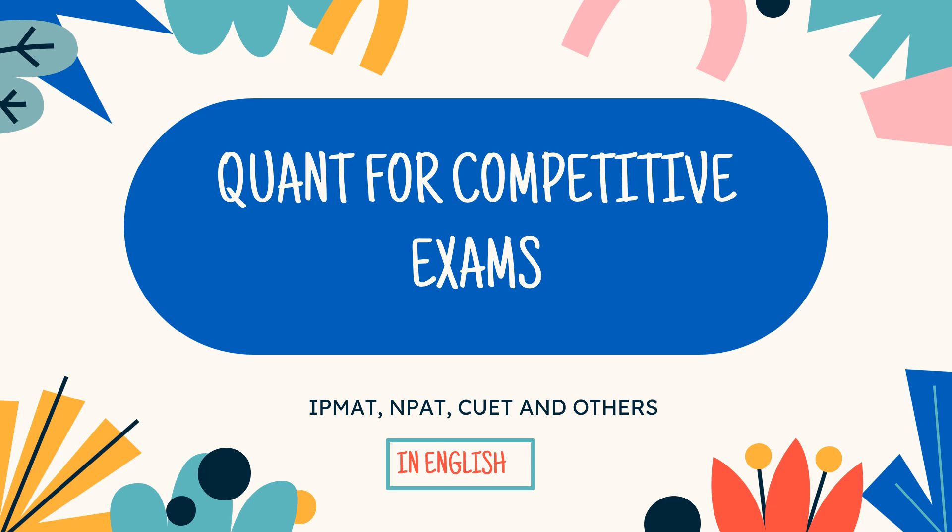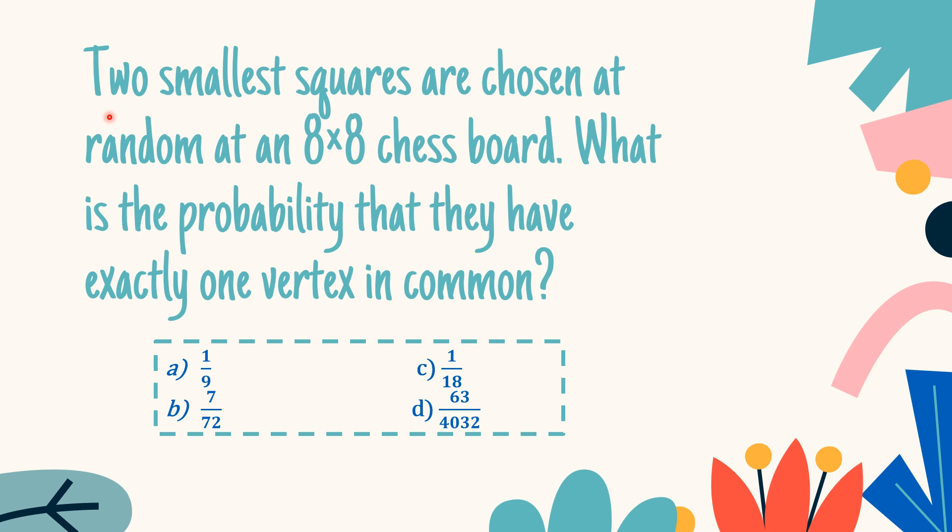Quant for competitive exams. We shall be solving another question today. The question says that two smallest squares are chosen at random at an 8 by 8 chess board. What is the probability that they have exactly one vertex in common? Here are the four options given to you.